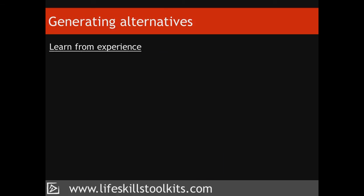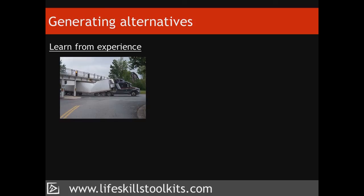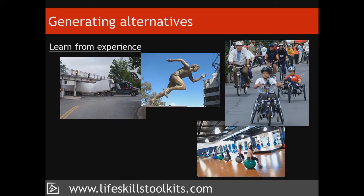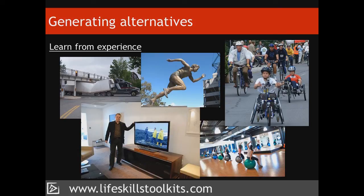Fifth, learn from experience. If you've faced a problem similar to the one you're facing now, use that experience to help identify alternatives. If you're aware of others who faced a similar problem, examine what they did. For example, while looking for alternatives to gather a £3,000 deposit, consider what you did the last time you had to save money, such as cancelling your gym membership for a year and running or cycling to stay fit. While working through experiences, keep an open mind so you don't fall into the trap of thinking these are the only alternatives worth considering.